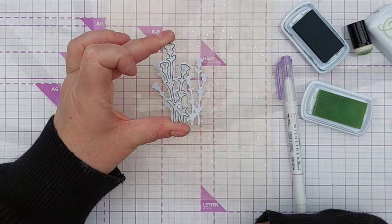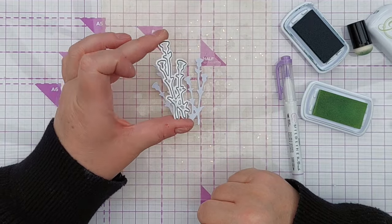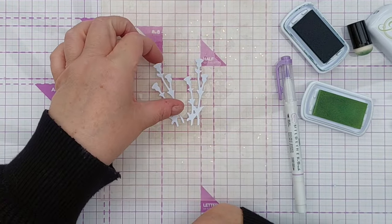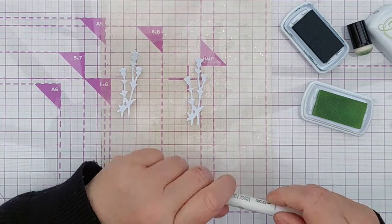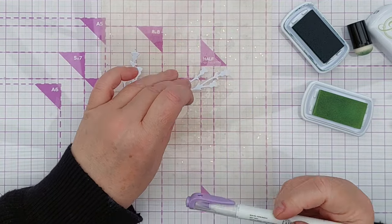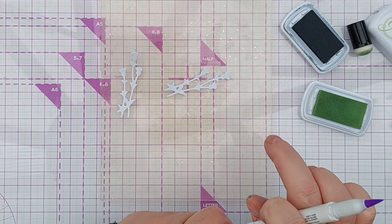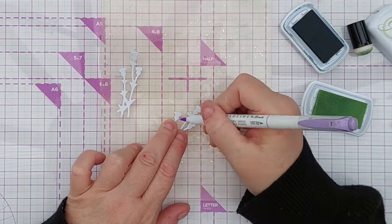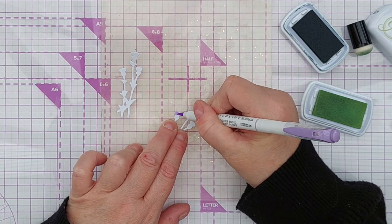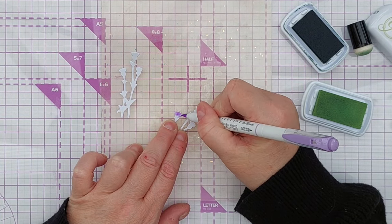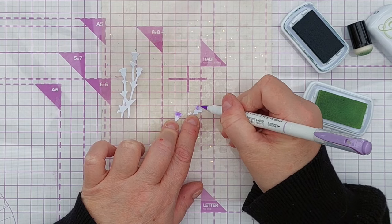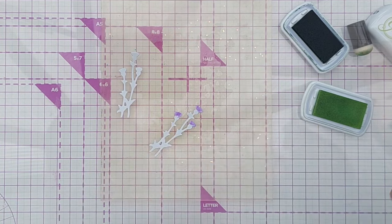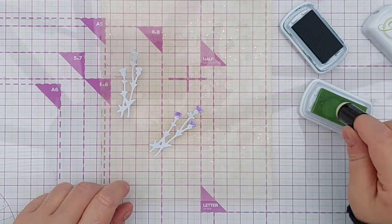So for my focal point I've cut two of these thistle die cuts using that smooth white cardstock and I've cut two because I want to layer them one on top of the other in a fashion. And what I'm going to do is colour the top of my thistles purple, just the fluffy bits that stick out the top and then on this first one